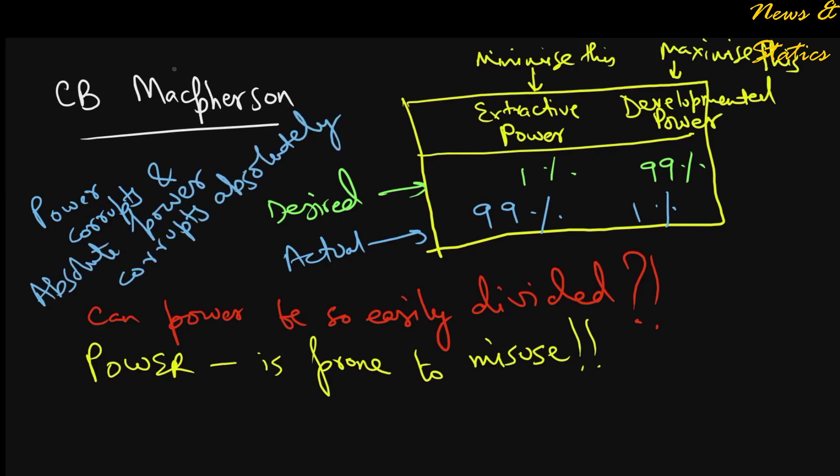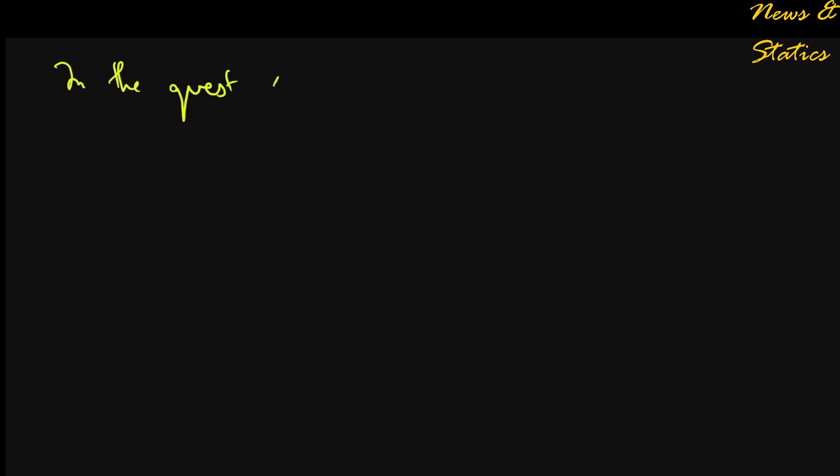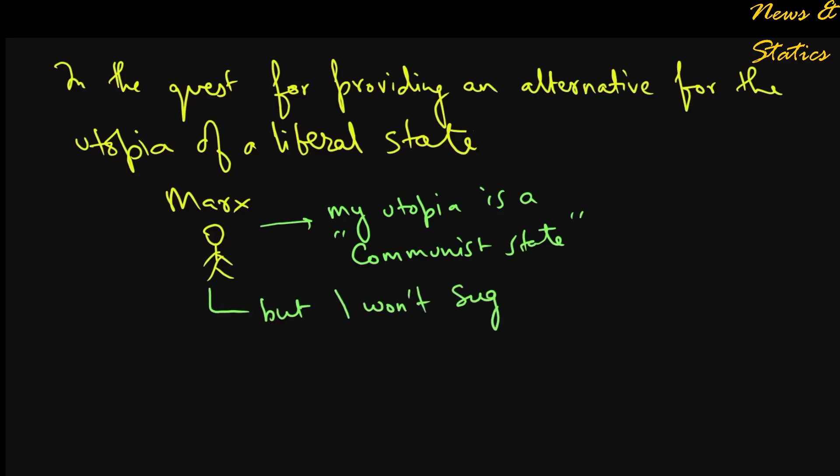This is why the British introduced the post of a district judge way back in 18th century India, because at that time the collector owned huge magisterial and judicial powers which seemed too much for a single person. Now in the quest for providing an alternative for the utopia of a liberal state, Marx devised his own utopia of a communist state without suggesting the nature of decisive leadership which will be required to transition from the present liberal to the future communist state.